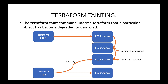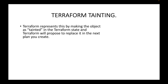If you want to replace any damaged resource, you can mark it as tainted, and when we run Terraform apply next time it will replace that resource. Terraform represents this by marking the object as tainted in the Terraform state file. Terraform maintains a state file for all the resources we have created. Whenever we taint a resource, Terraform marks it as tainted in the state file, and then proposes to replace that resource in the next plan or the next Terraform apply.